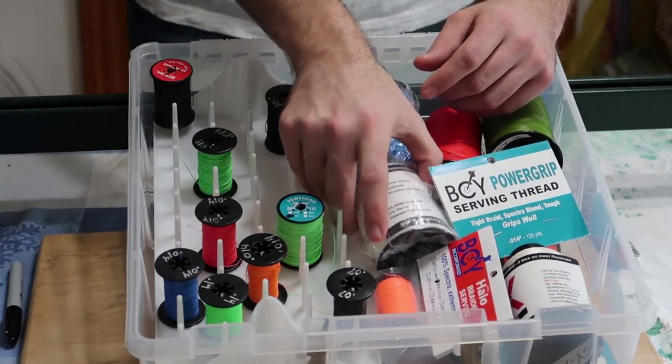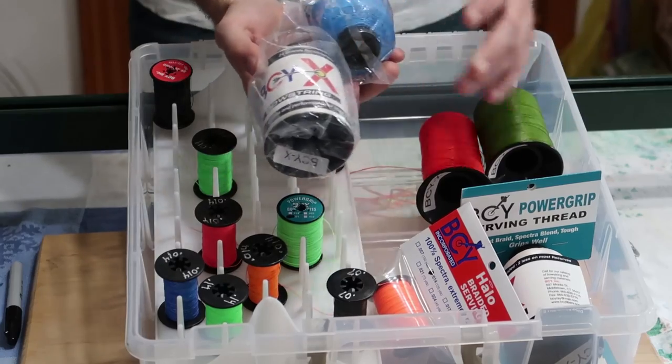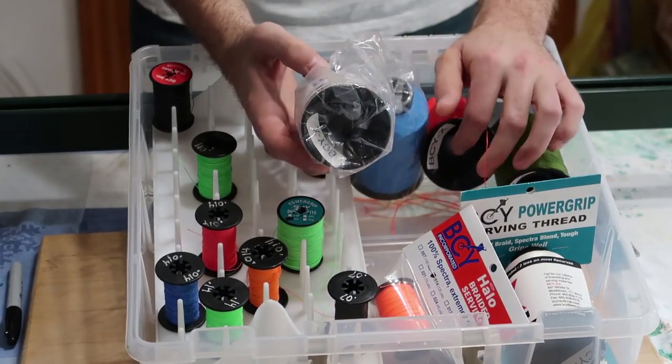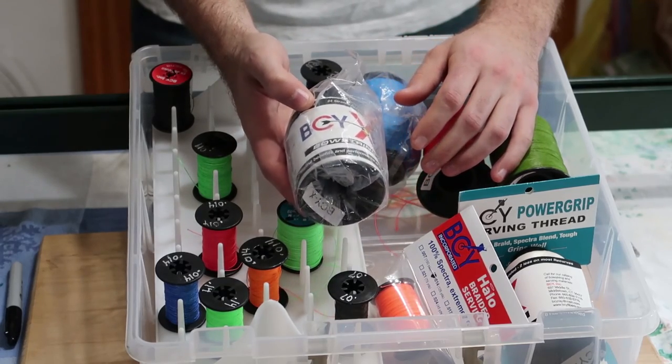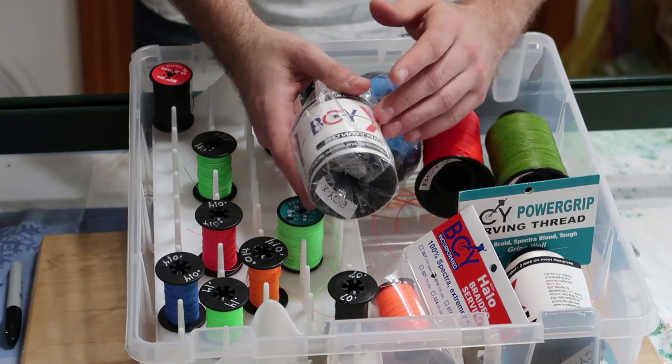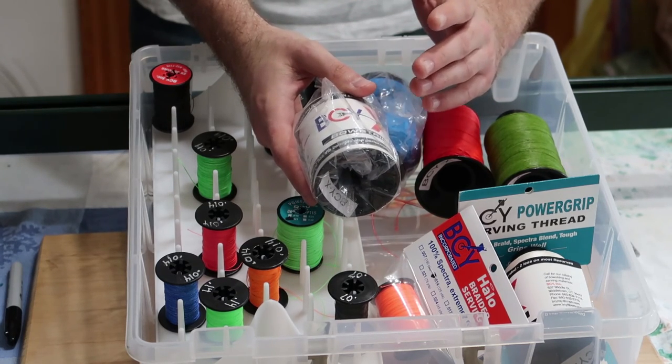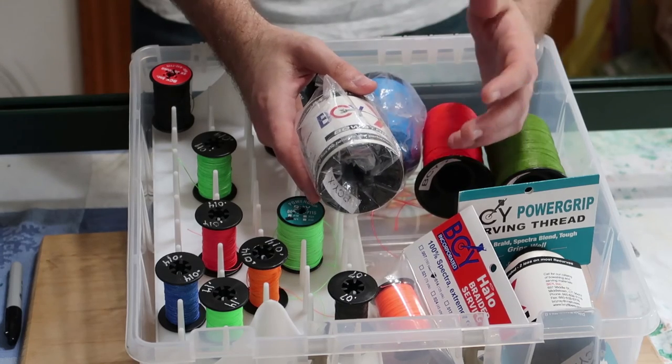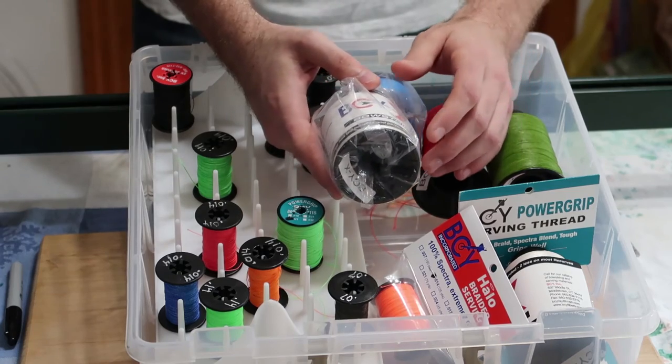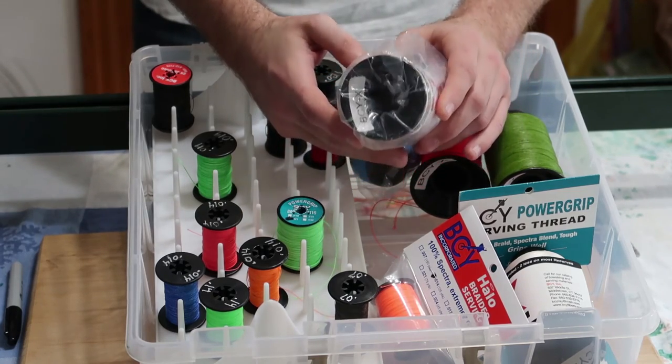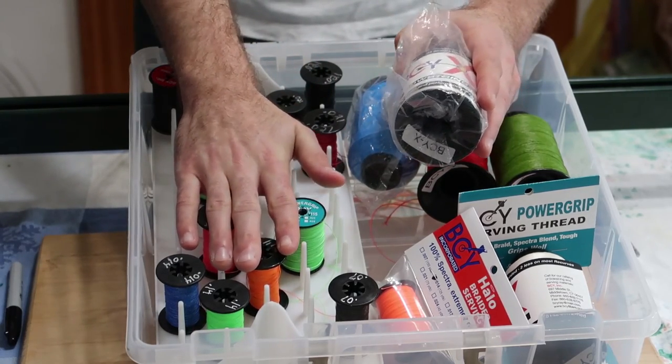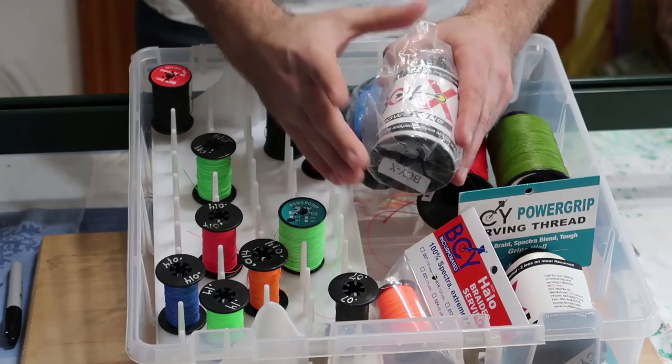For bowstring, these larger spools, this is BCYX. The strand size doesn't change, at least for the BCYX. Now, if you bought a different type of BCY bowstring, they make other types, the string size could vary some. But for this, it's all the same, unless you're talking about servings. But right now, we're going to focus on bowstring.